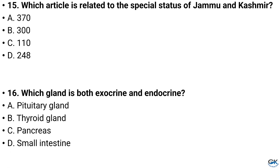Question number 15. Which article is related to the special status of Jammu and Kashmir? Option A: 370, Option B: 300, Option C: 110, Option D: 248. And the answer is Option A: 370.